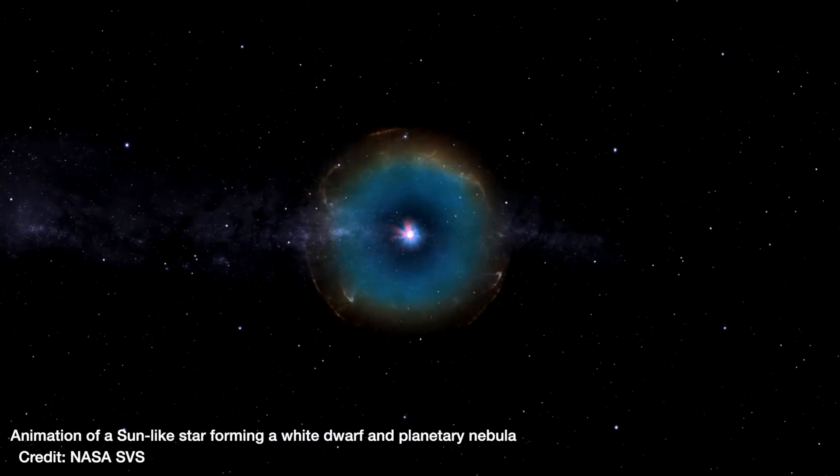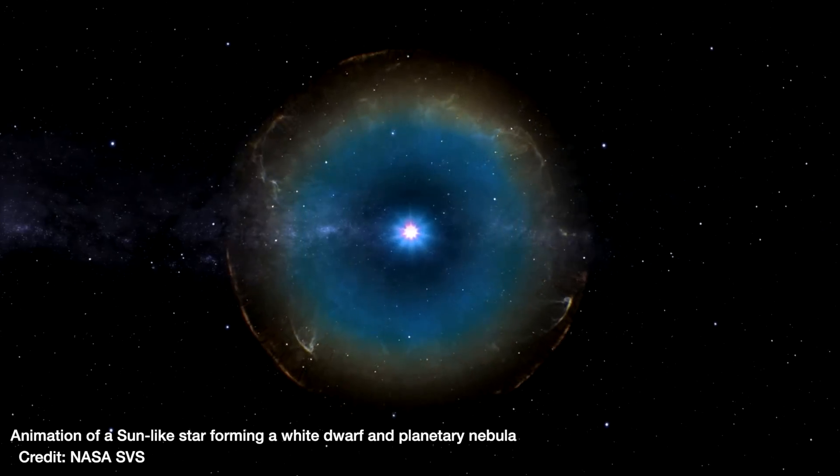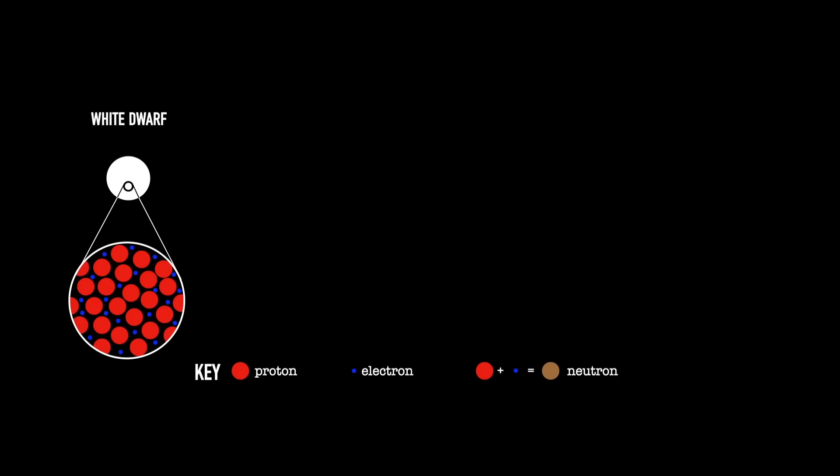That will be the pressure from electrons that resists gravity crushing it down. A star more massive will become a neutron star, and then it's the pressure from neutrons just being as closely packed as they can be that's resisting that crush of gravity down.